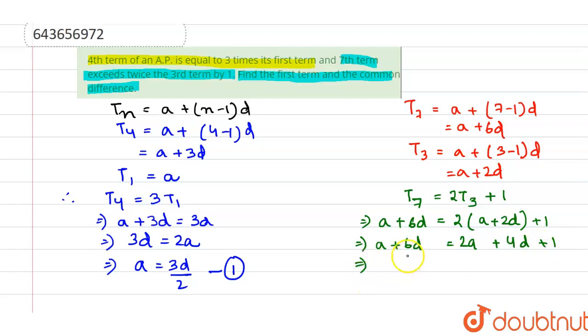Bringing all the values of d's on one side, we have 6d minus 4d is equals to 2a minus a plus 1 or 2d is equals to a plus 1.